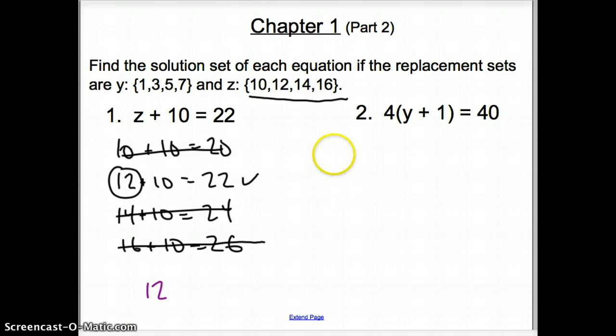Next for number two. Now we have to do the same exact thing except now it is y. So we use the y data set and you can do this a couple different ways. You can distribute it right away or you can plug in the points. Well, I'm going to distribute it right away. So now we have 4y plus 4 equals 40. And now I'm going to plug the data points into this equation, this new equation. So I'm going to start with 1. 4 times 1 plus 4. And 4 times 1 is 8 plus 4 is 8.